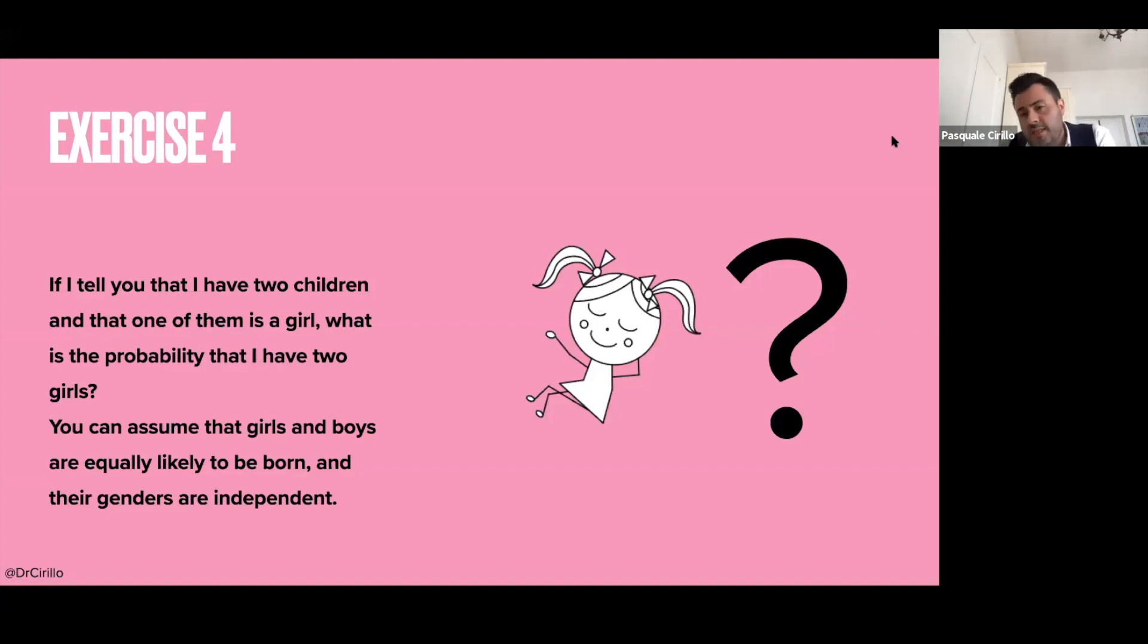We also provide some additional information to simplify the computation. So we assume that the probability that if you have a child, he or she is a boy or a girl is essentially the same. And we also assume that the genders are independent. So the fact that my first child is a girl does not affect the fact that the second child is a girl or a boy. So you assume independence.